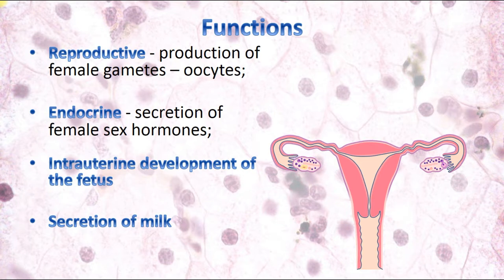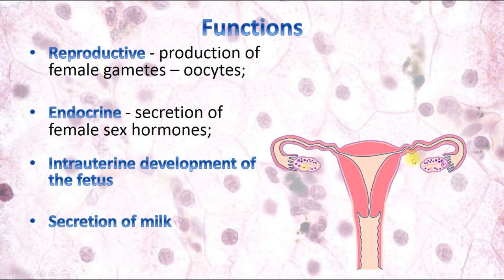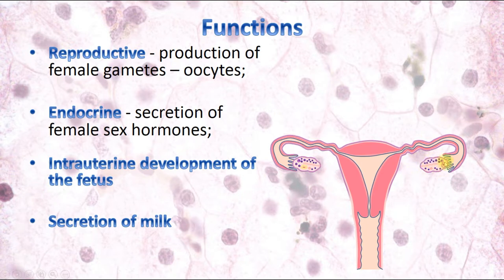The female reproductive system has similarities with the male reproductive system in both function and structure. The similar functions are reproductive and endocrine functions. The female reproductive function involves production of female gametes called oocytes or ova, produced in the ovaries through a process called ovogenesis. The male reproductive system similarly produces spermatozoa, which are provided by the testes.